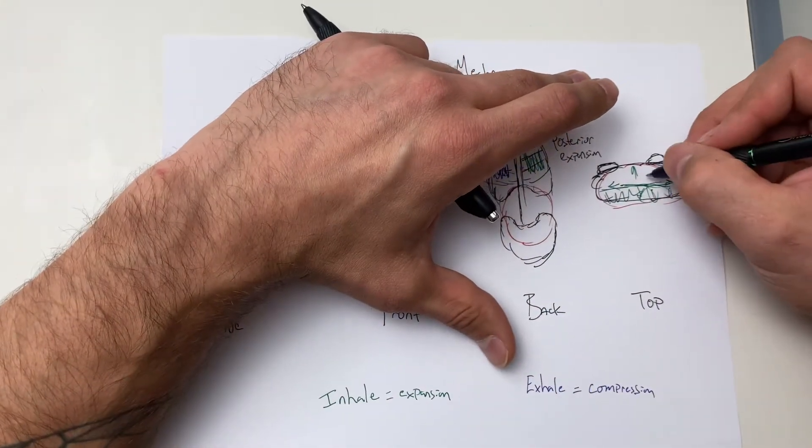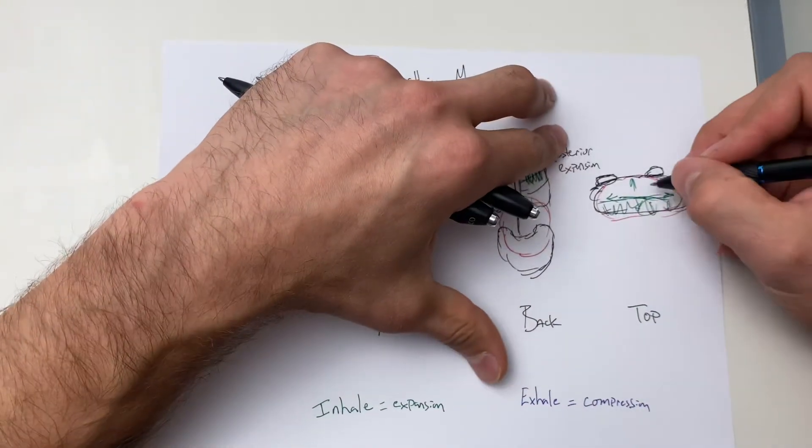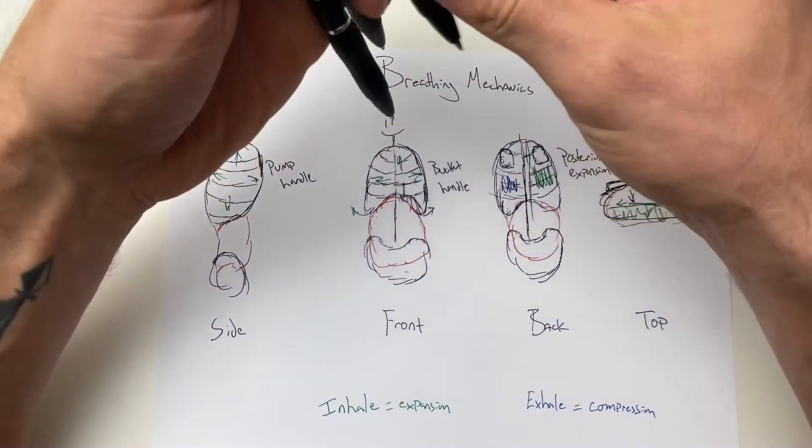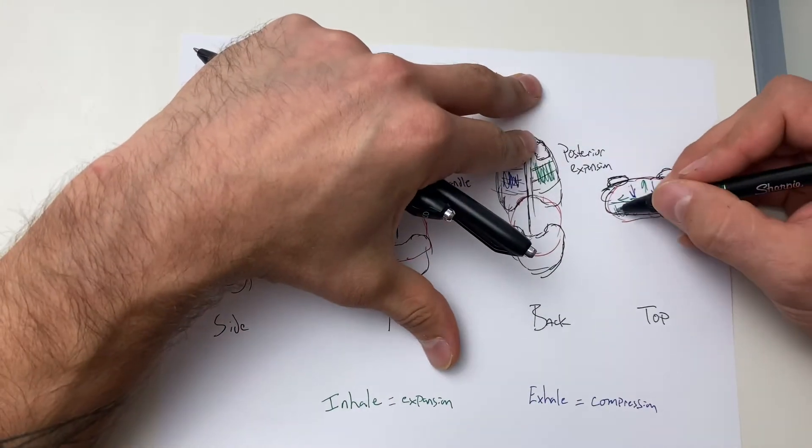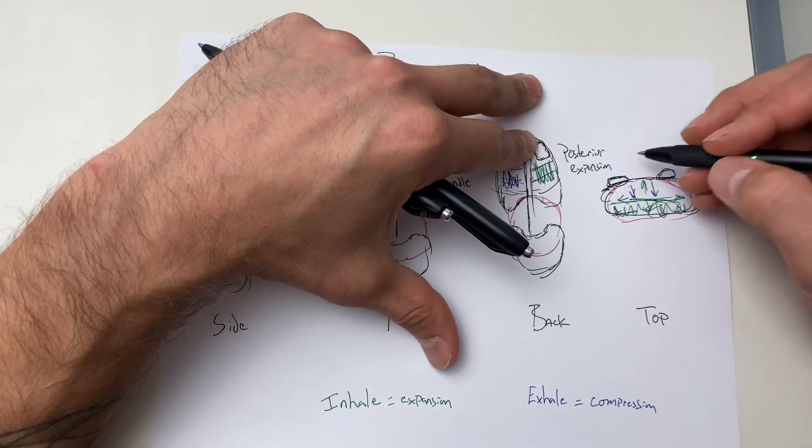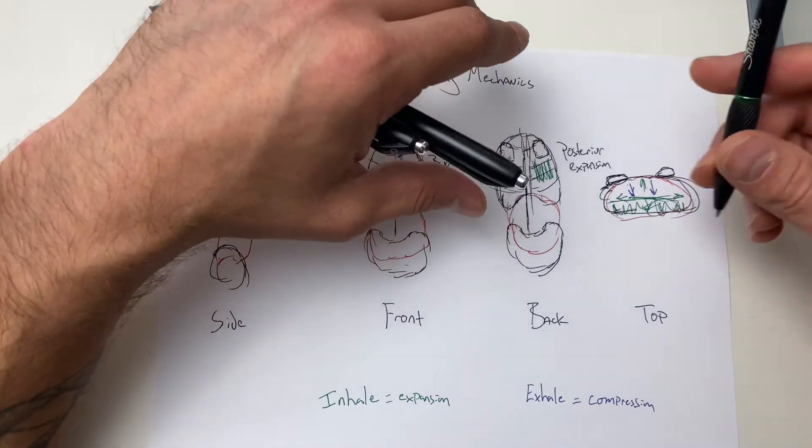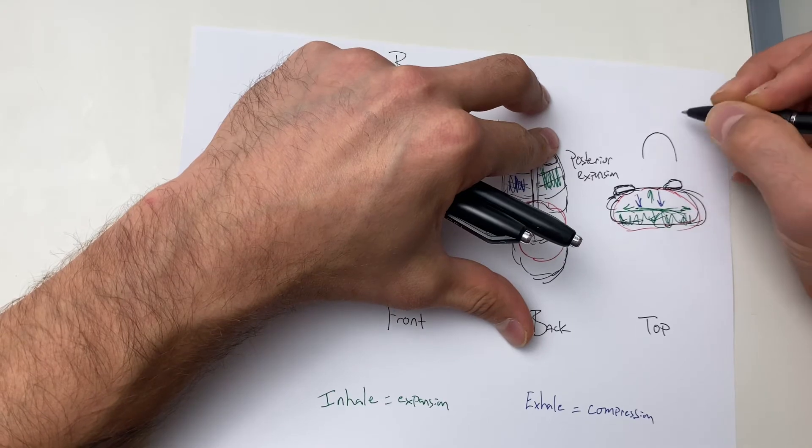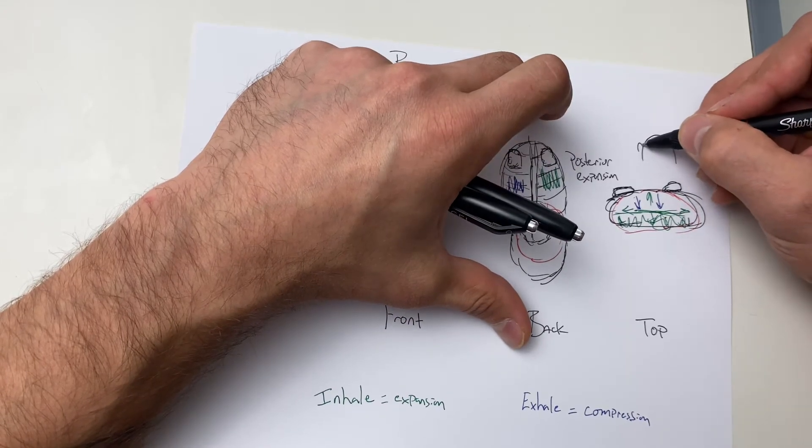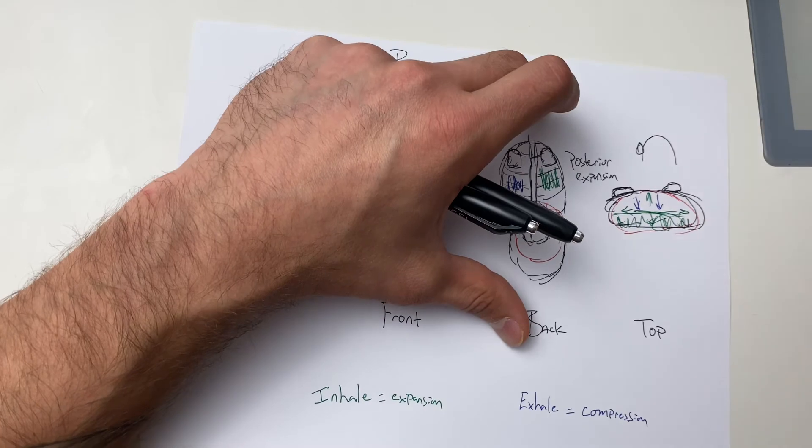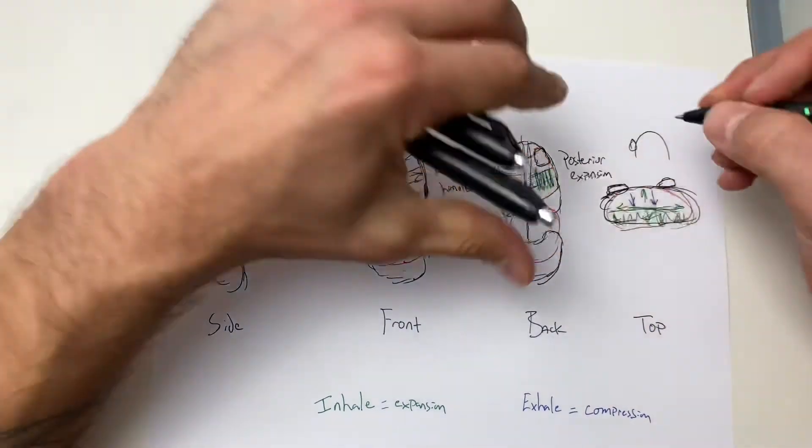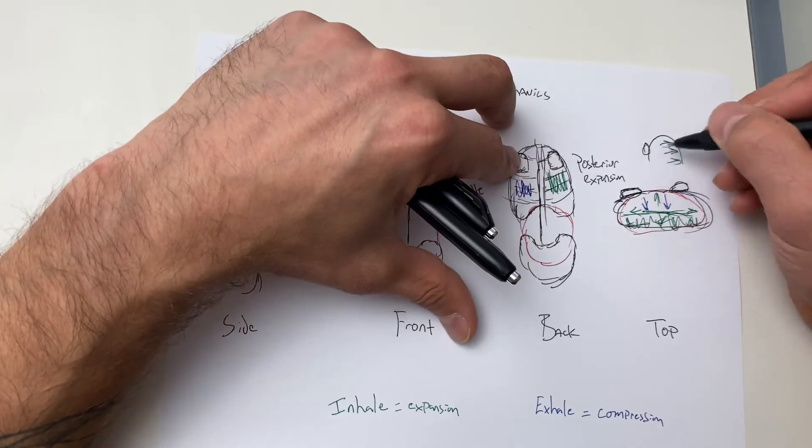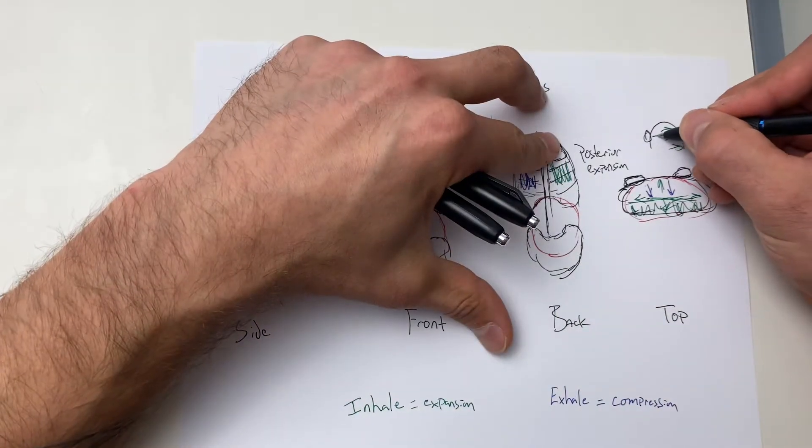So what actually may happen is we'll get, on an inhale, we'll actually get compression in the rear part, the posterior part of the rib cage, but we'll get expansion here in the front. And what ends up happening is the shoulder blades, so here's the rib cage, and then the shoulder blades sit on the rib cage like that.